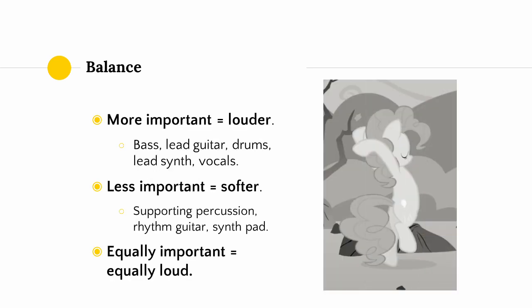When deciding how to adjust the volume of each track, we think about what instruments are important and need to sit in the foreground — usually things like singing, lead guitar, bass, drums, lead synths. Because we want these instruments to stand out, we need to make them louder.